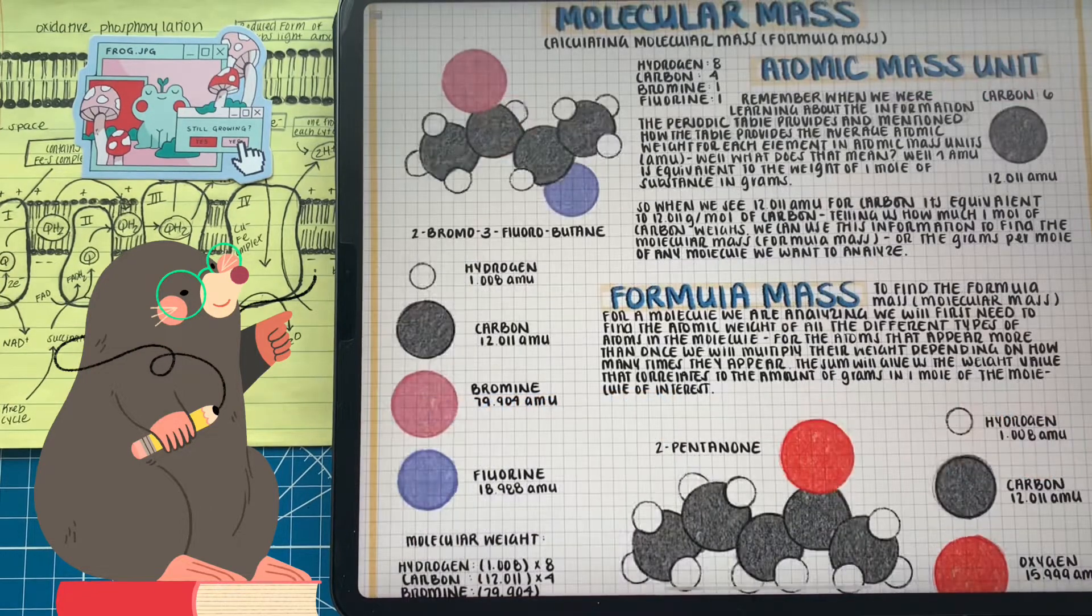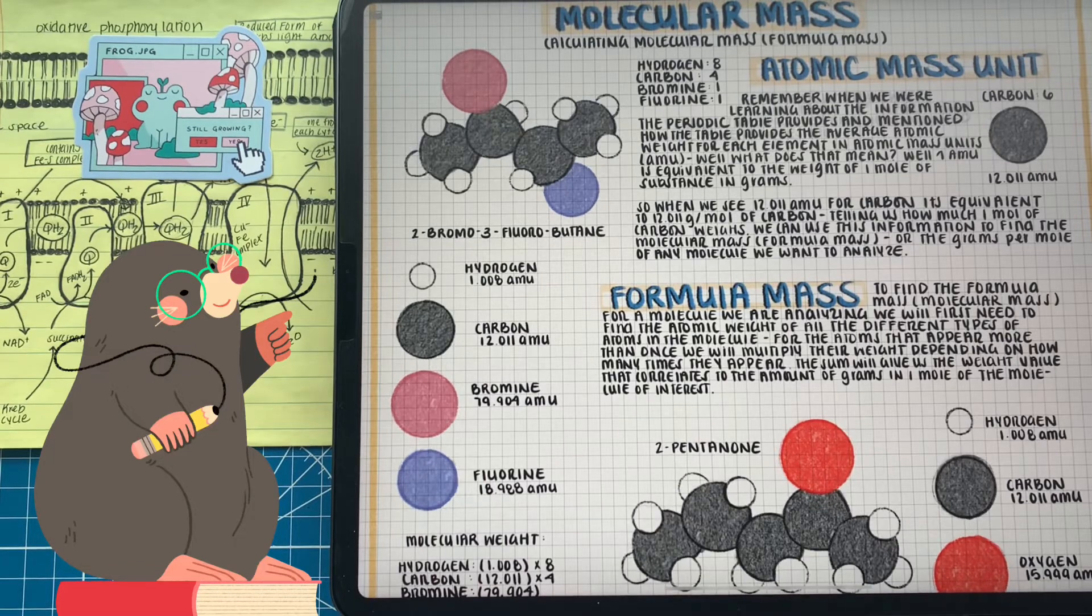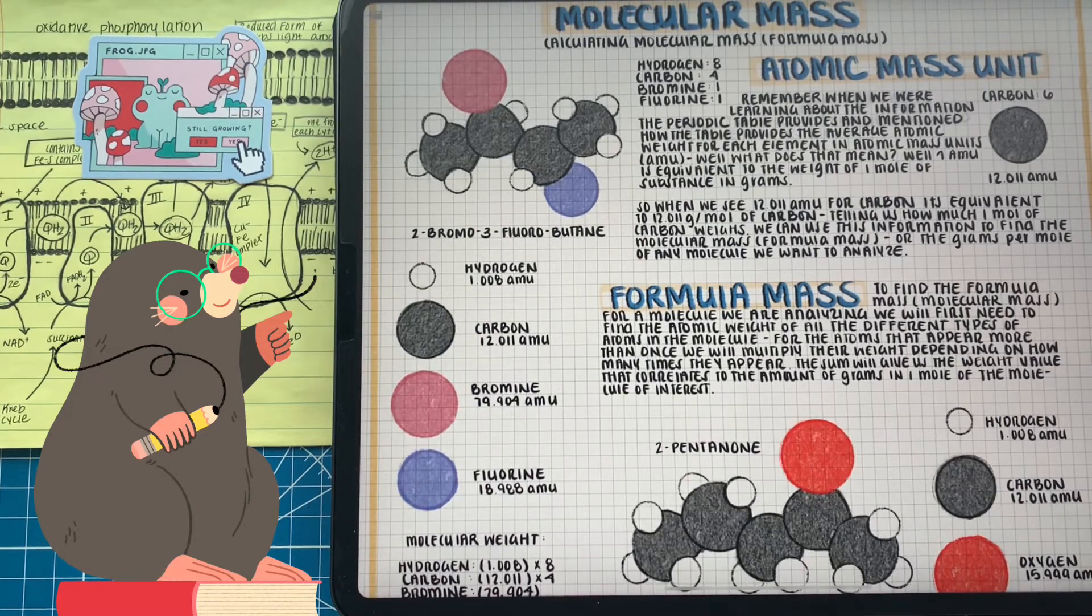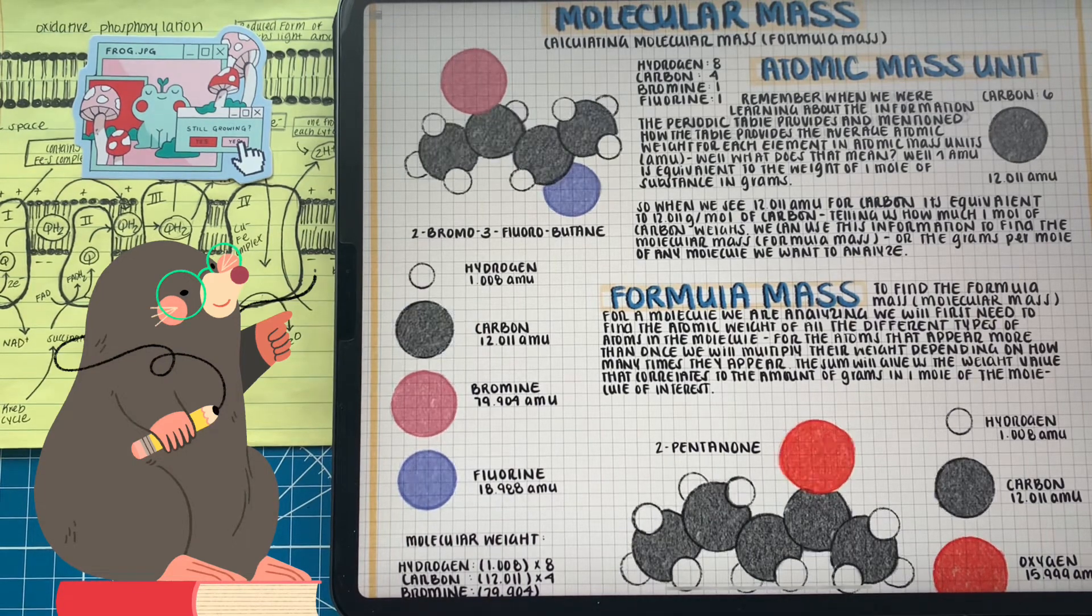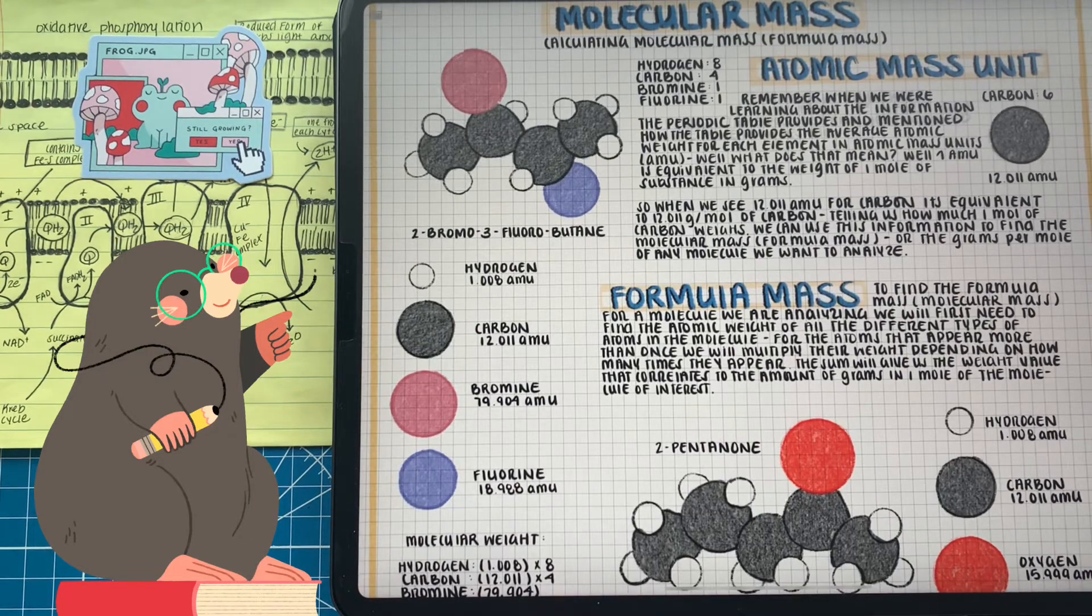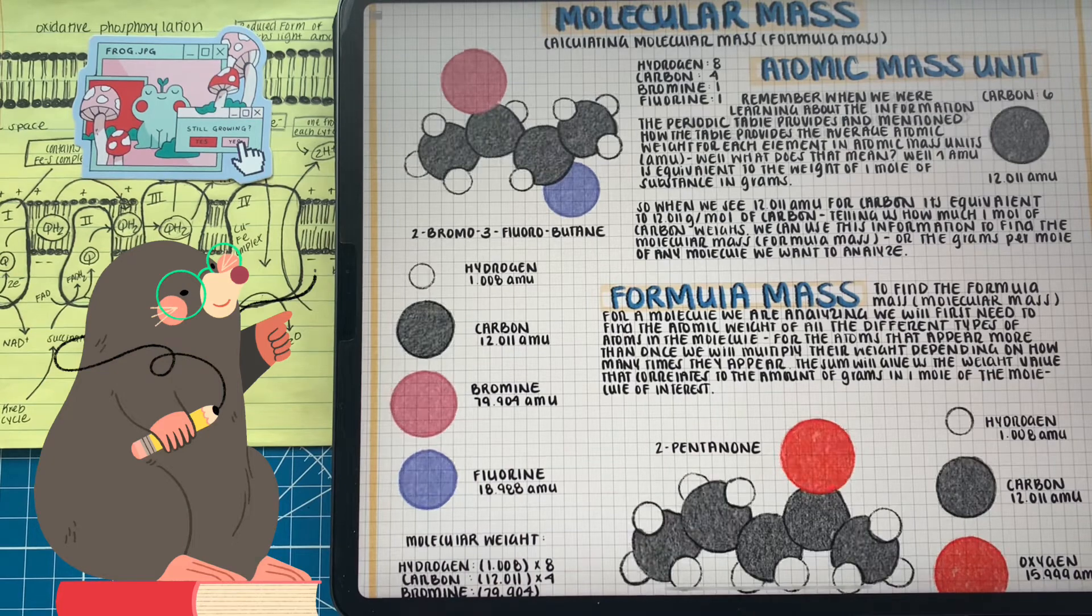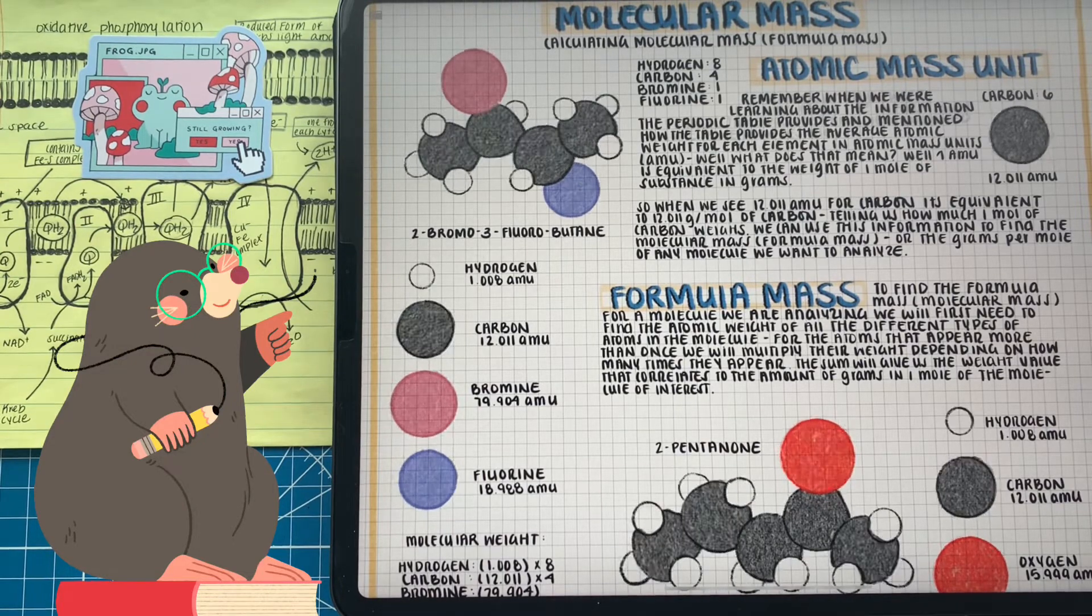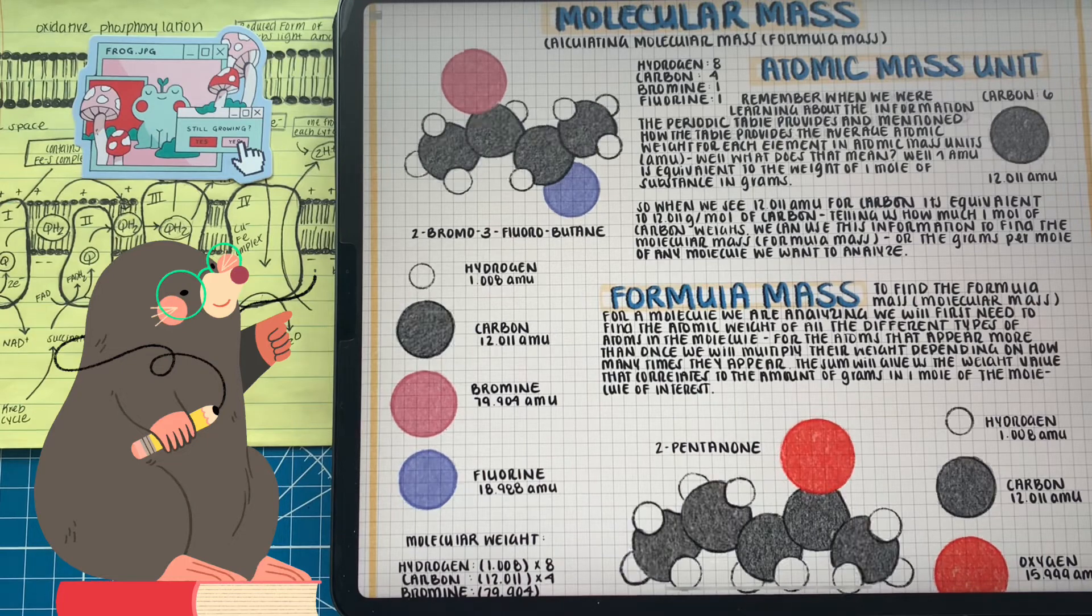There's a few more relationships that we can build. Remember when we were talking about the periodic table and how many properties we know about an element on the table? One of those properties was atomic mass, measured in AMU. What does atomic mass unit mean? Well, one gram per mole equals one AMU. So all the atomic weights that we see in the periodic table can be converted to a relationship that relates mass with the number of moles. For example, carbon is 12 AMU, so it's actually 12 grams per mole.